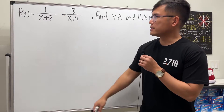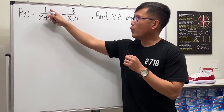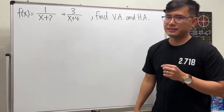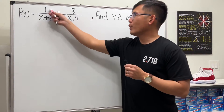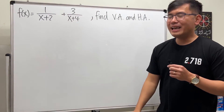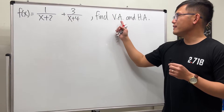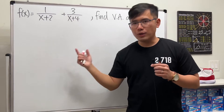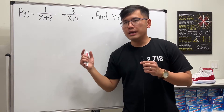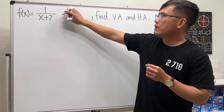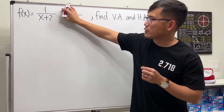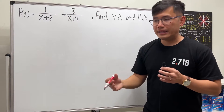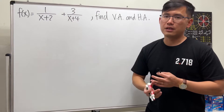We are given f(x) = 1/(x+2) + 3/(x+4). And we are going to find the vertical asymptotes and also the horizontal asymptotes for that. For this one in particular, it's actually okay to find the vertical asymptotes and horizontal asymptotes for these two individually and then put the answers together.